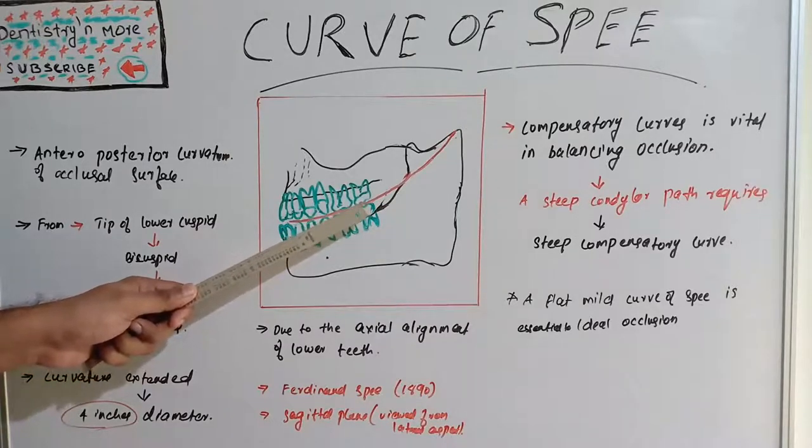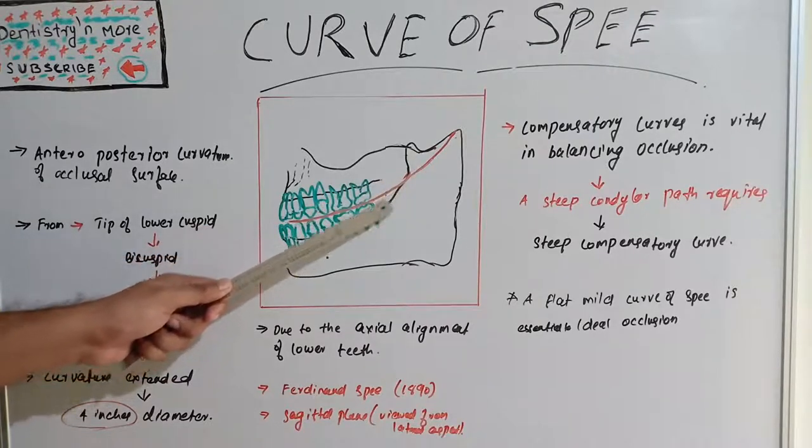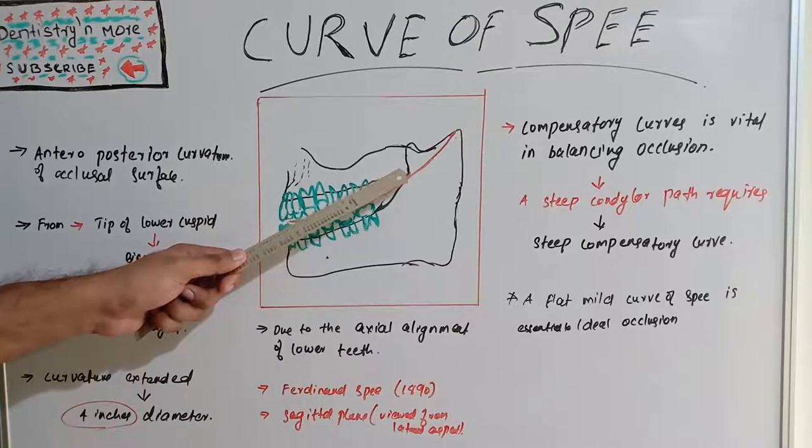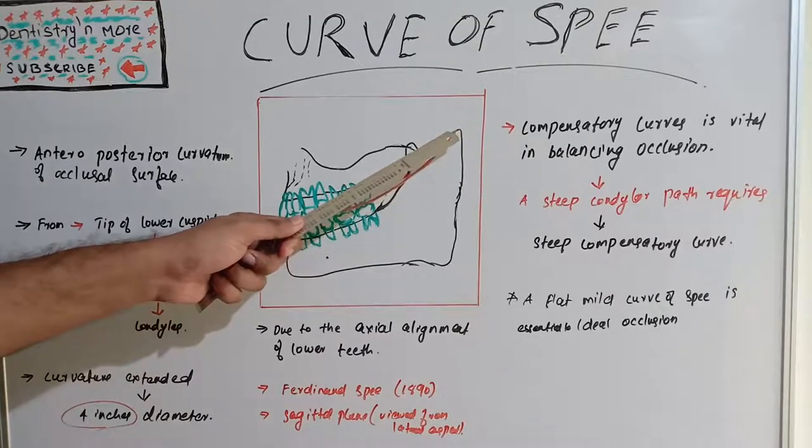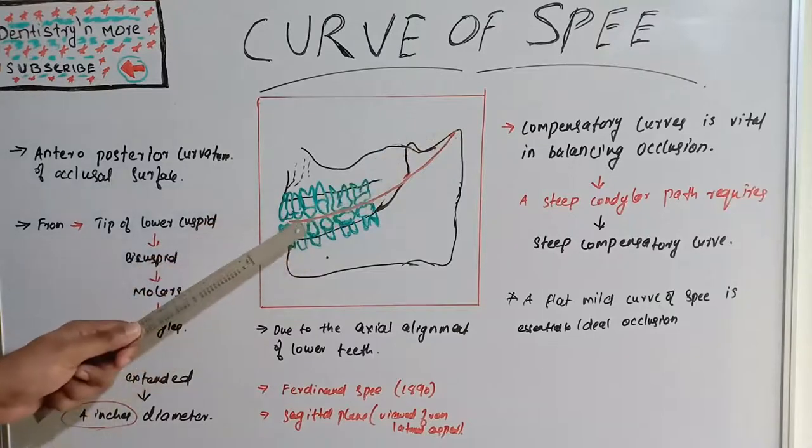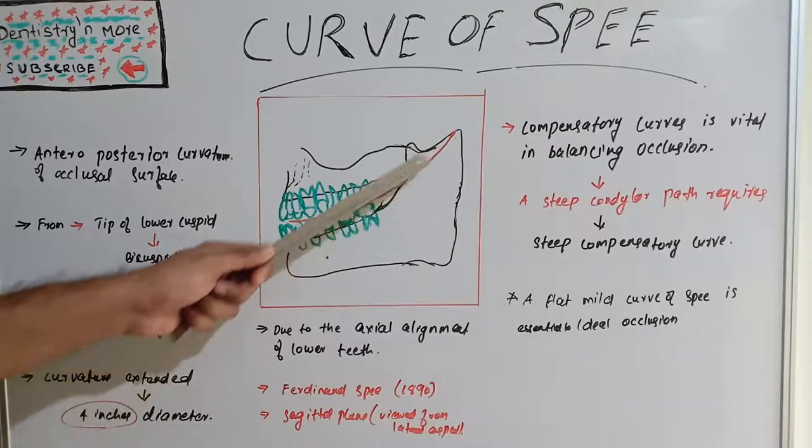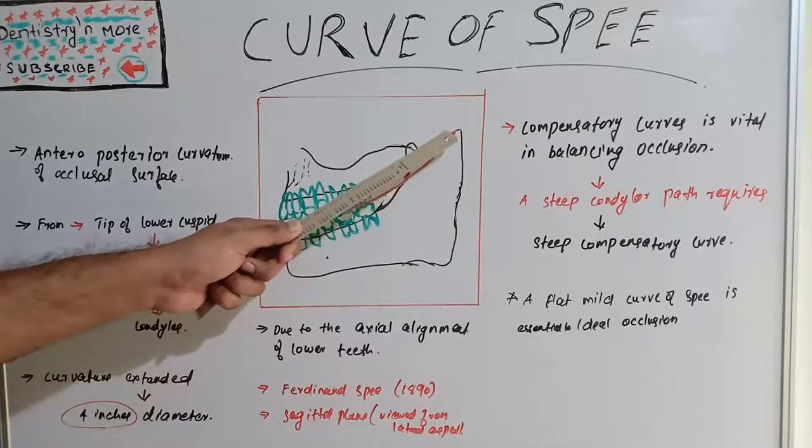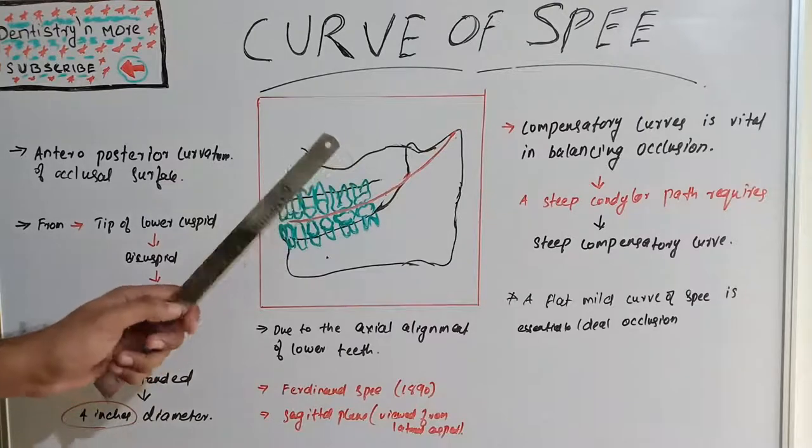It continues through the anterior border of ramus of mandible and ends at the anterior aspect of mandibular condyle. This arc starts from the mandibular canine, premolars, molars, anterior border of ramus of mandible and reaches the anterior aspect of the mandibular condyle.